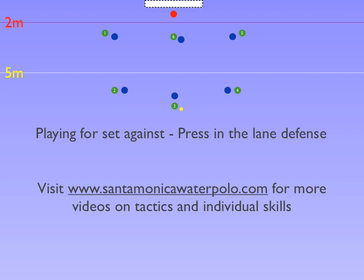To be able to receive a pass, offensive players need to separate from their defenders. V-cut driving allows offensive players to drive into their defender and then release out for a pass, as demonstrated by number 2 and number 4.